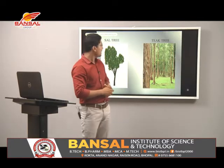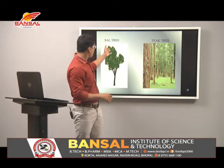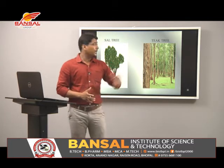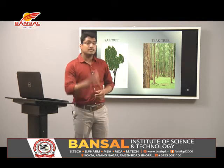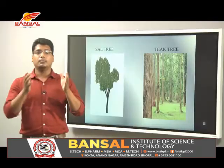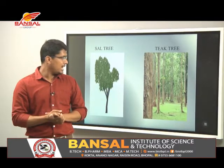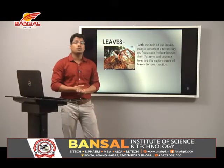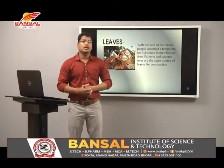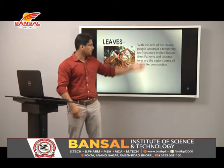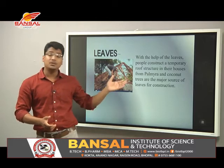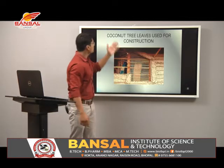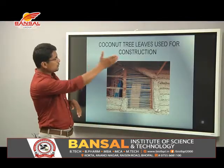Here are pictures of the sal tree and teak tree. The sal tree is found in Morni and the Kalashara forest in North East and Central India. The teak tree, also known as Sagon, is found basically in the peninsular region; it is an indigenous species found up to 24 degrees North. Next is leaf: with the help of leaves, people construct temporary roof structures in their houses. Palmyra and coconut trees are the major sources of leaves for construction.